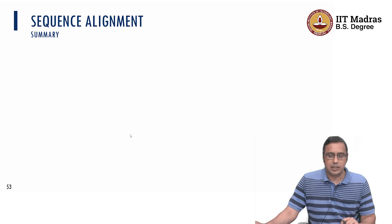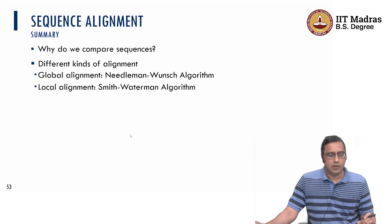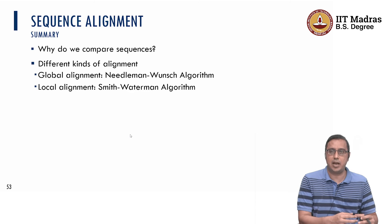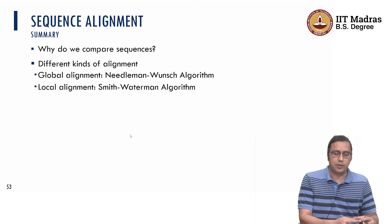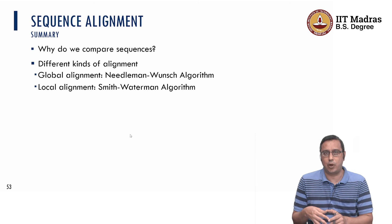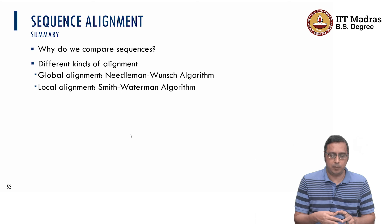Let me summarize sequence alignment. We studied why we compare two sequences and the different biological questions we can answer using sequence alignment. We also studied how we can formulate the sequence alignment problem as a Manhattan tourist problem solvable using dynamic programming. We discussed two kinds of alignment problems: the global alignment problem, solved using the Needleman-Wunsch algorithm, and the local alignment problem, solved using the Smith-Waterman algorithm.